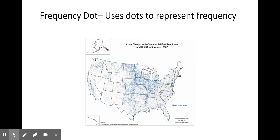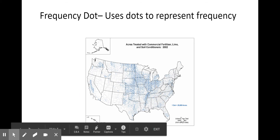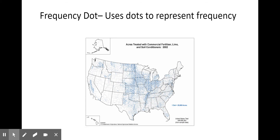Next is called a frequency dot map. It is exactly what it sounds like — a dot is used to represent instances of something on a map. Oftentimes a dot represents a specific amount of something. This is a good map to think of for the agriculture unit, where one dot represents 25,000 acres of farmland treated with commercial fertilizer. You can see all the different instances throughout the United States and get a sense of where the major agricultural regions are.